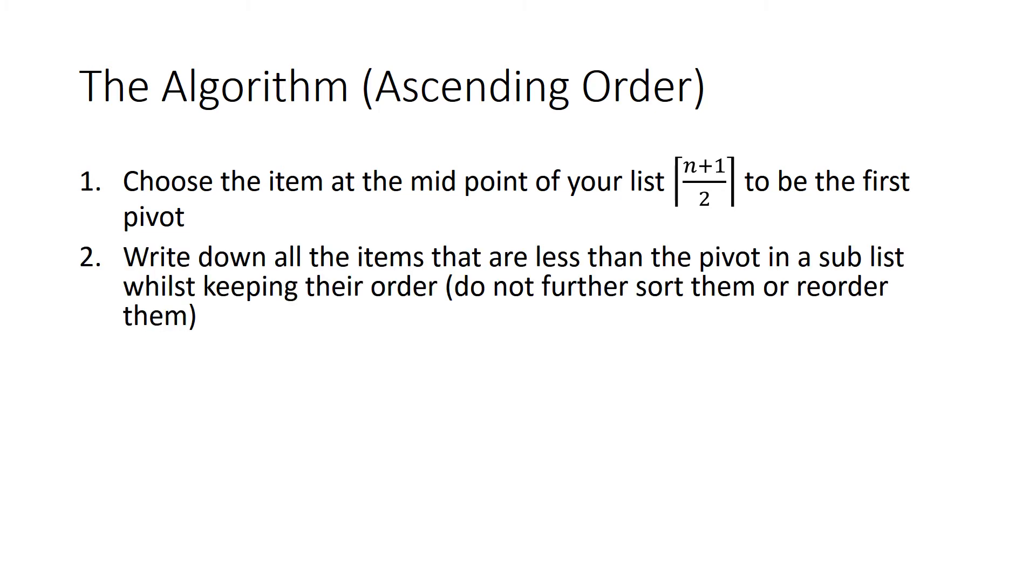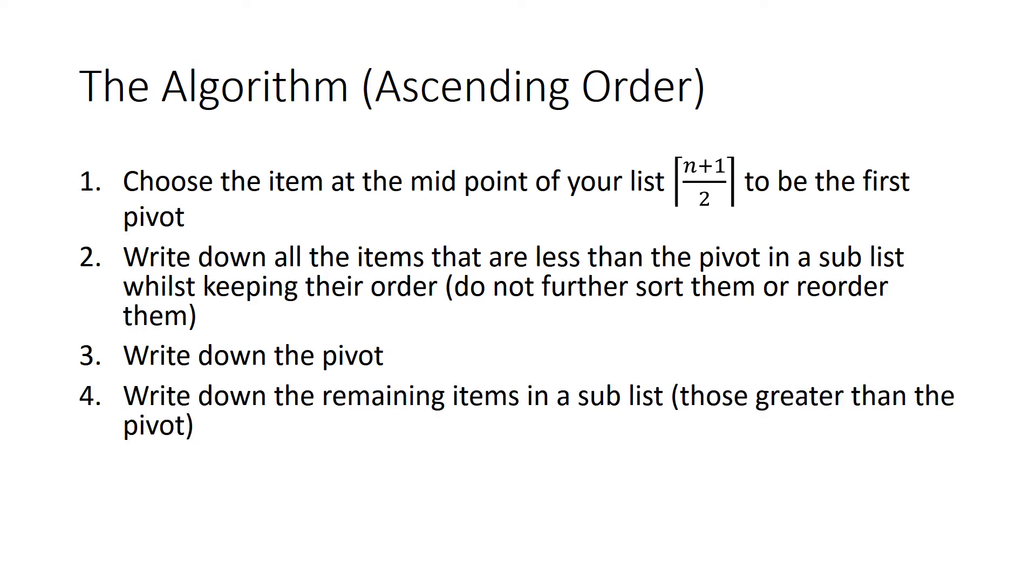So the second step is write down all the items that are less than the pivot in a sublist while keeping them in order. So any number that's less than the pivot, write it down, but don't re-sort them.